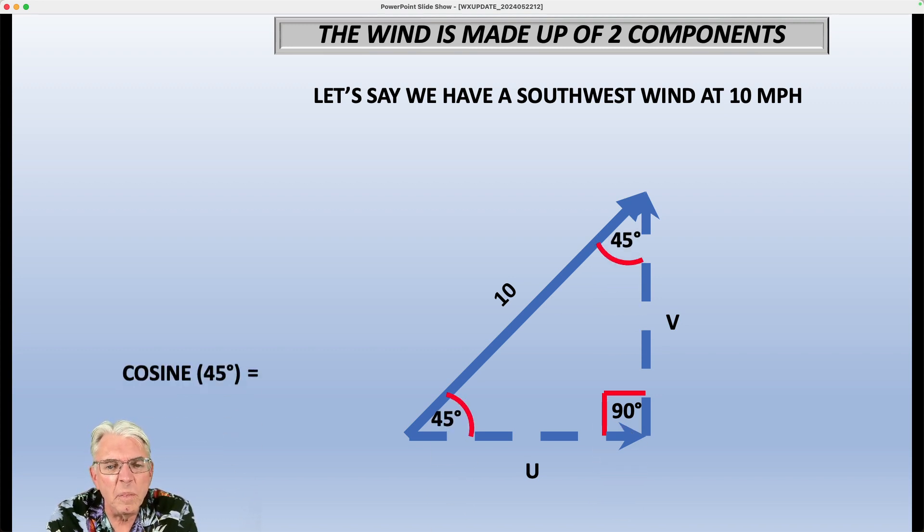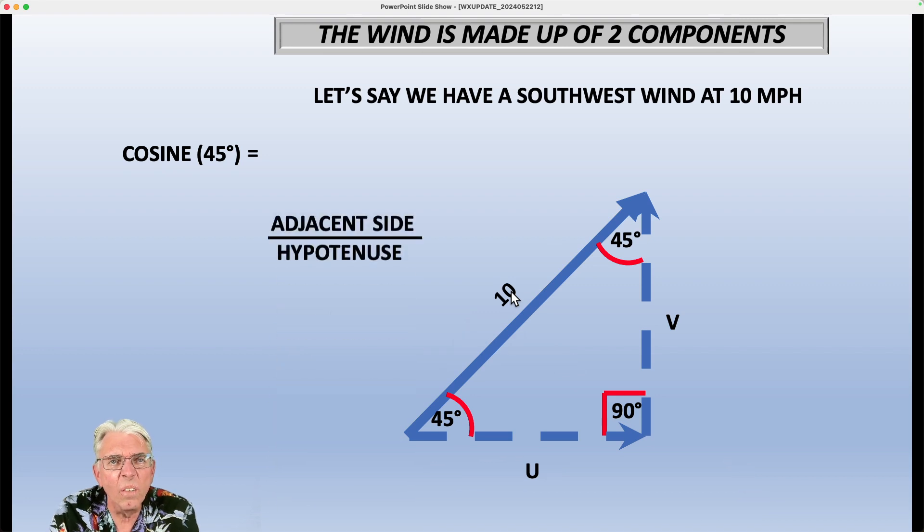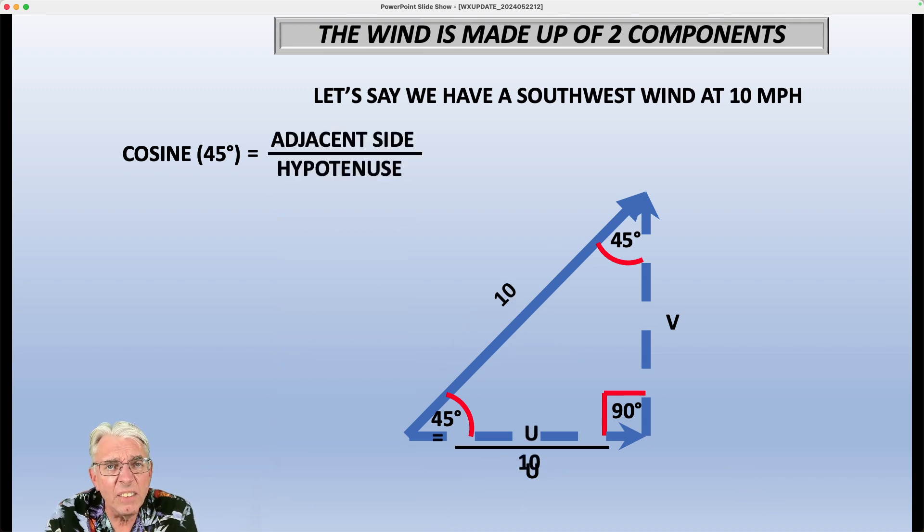Now, this is where we get into a little bit of trigonometry. The cosine of an angle is defined as the adjacent side to that angle divided by the hypotenuse, which is the side of the triangle opposite the right angle or the 90 degree angle. So the cosine of this angle right here is the ratio of the U component of the wind, which is the adjacent side, divided by the hypotenuse, which we already know is 10. So the adjacent side divided by the hypotenuse is U divided by 10.